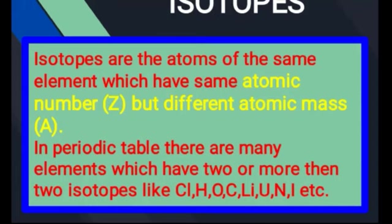Isotopes are the atoms of the same element which have the same atomic number but different atomic mass۔ Isotope کسی بھی element میں پائے جانے والے atoms کا atomic number کی بنیاد پر تو ایک جیسے ہوتے ہیں but they have a different number of neutrons۔ Periodic table میں ہمارے پاس بہت سارے elements ہیں جن کے دو یا دو سے زیادہ isotopes ہیں۔